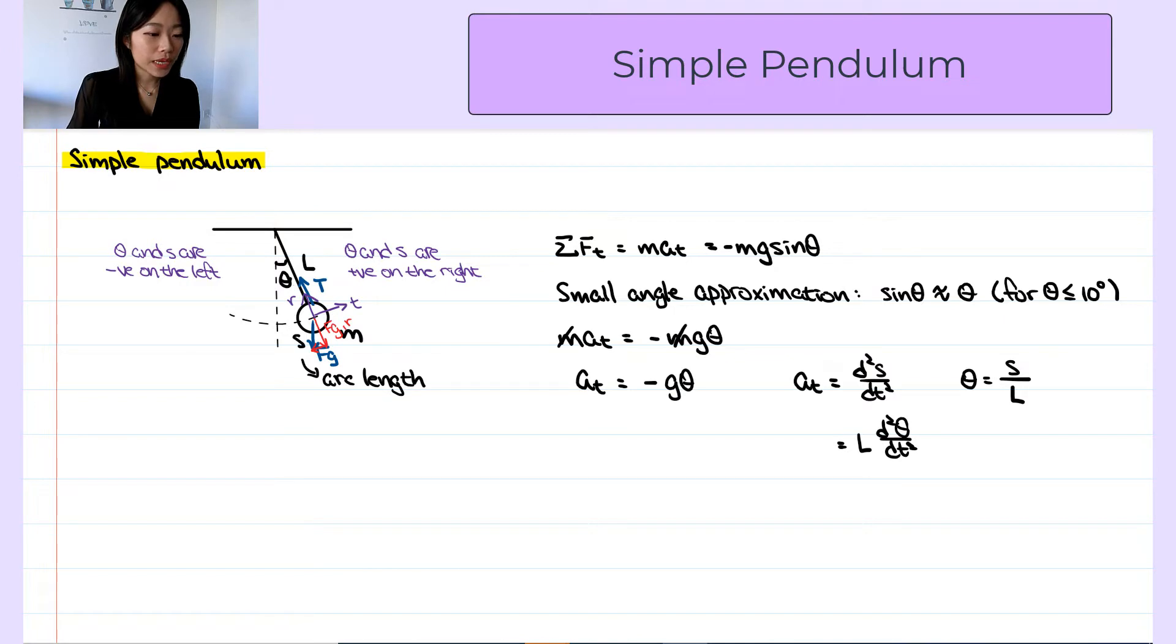So this equation becomes l times second derivative of theta equals negative g times theta. Now if we isolate for the second derivative of theta, we get second derivative equals negative g over l times theta.